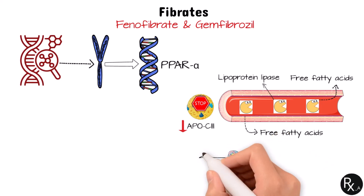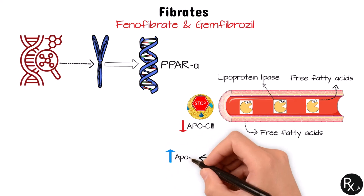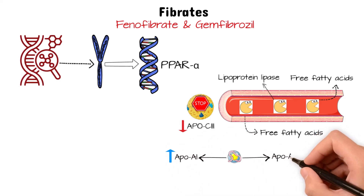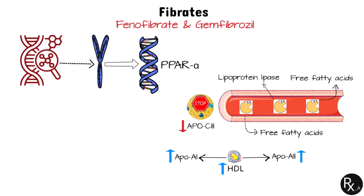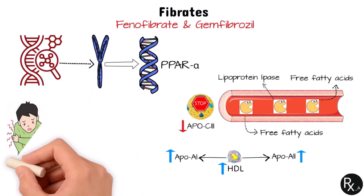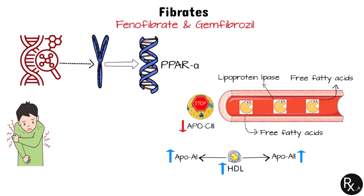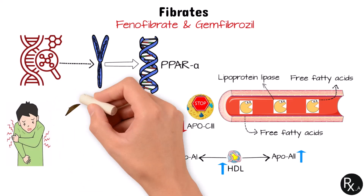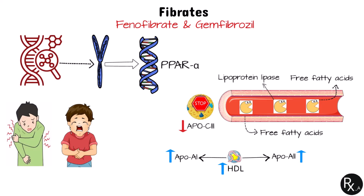Triglycerides are removed from circulation and broken down into fatty acids more quickly when lipoprotein lipase is expressed more frequently, which is one of the primary effects of fibrates. Fibrates also reduce the expression of a protein known as apo-C-III, which inhibits the activity of lipoprotein lipase. Lastly, fibrates additionally increase the expression of the proteins apo-AI and apo-AII, which are important parts of HDL, and increase their concentrations. Similar to statins, fibrates can cause myopathy and rhabdomyolysis, especially in patients with impaired renal function. The exact mechanism of myotoxicity is still unknown, but it is thought to be multifactorial. Gastrointestinal disturbances are the most frequent adverse effects. Finally, because fibrates increase the cholesterol content of bile, they may increase the risk of gallstone formation.